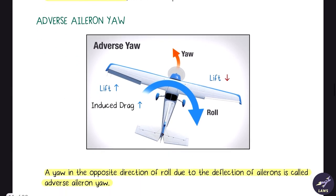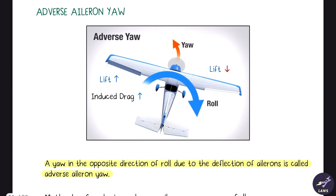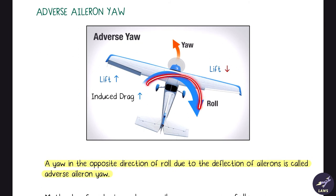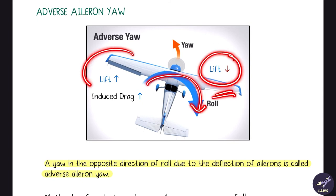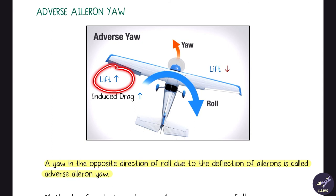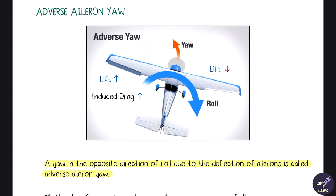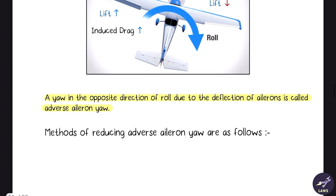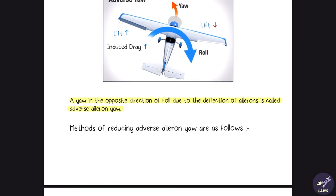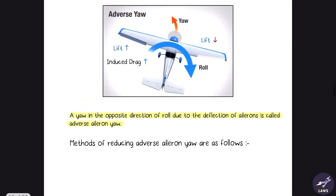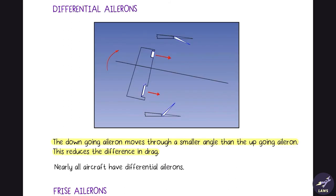Adverse aileron yaw is yaw in the opposite direction of roll. If the aircraft is rolling to the right, the lift on the right wing is less and the lift on the left wing is more. Since lift is greater on the left, induced drag is greater there, causing a yaw in that direction — this is known as adverse yaw.